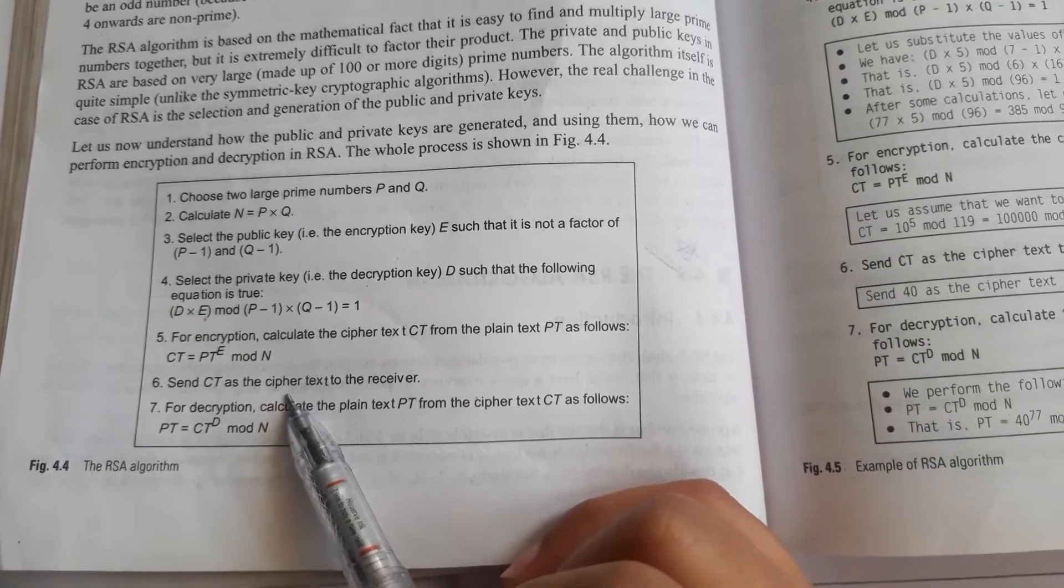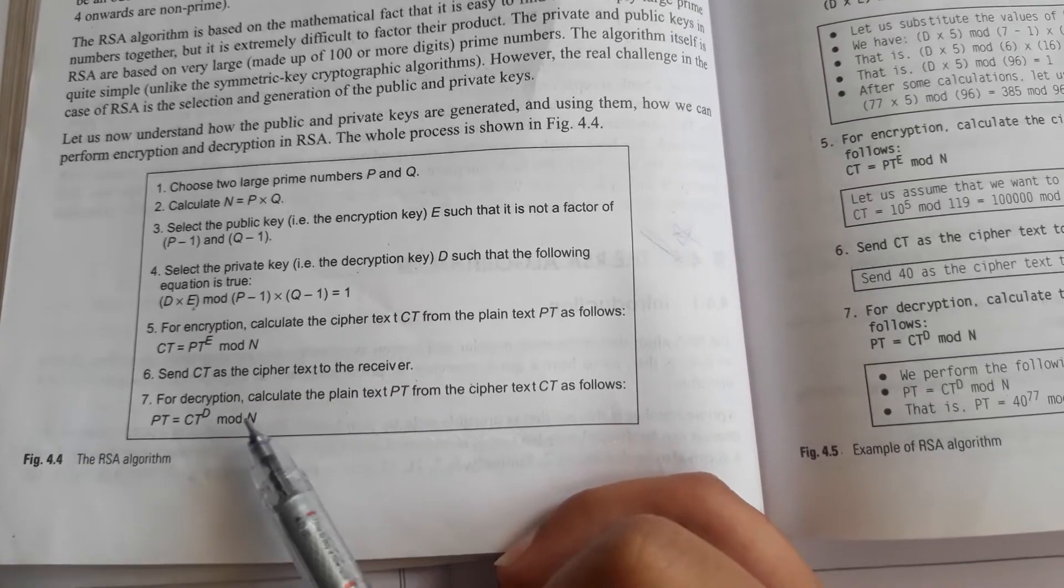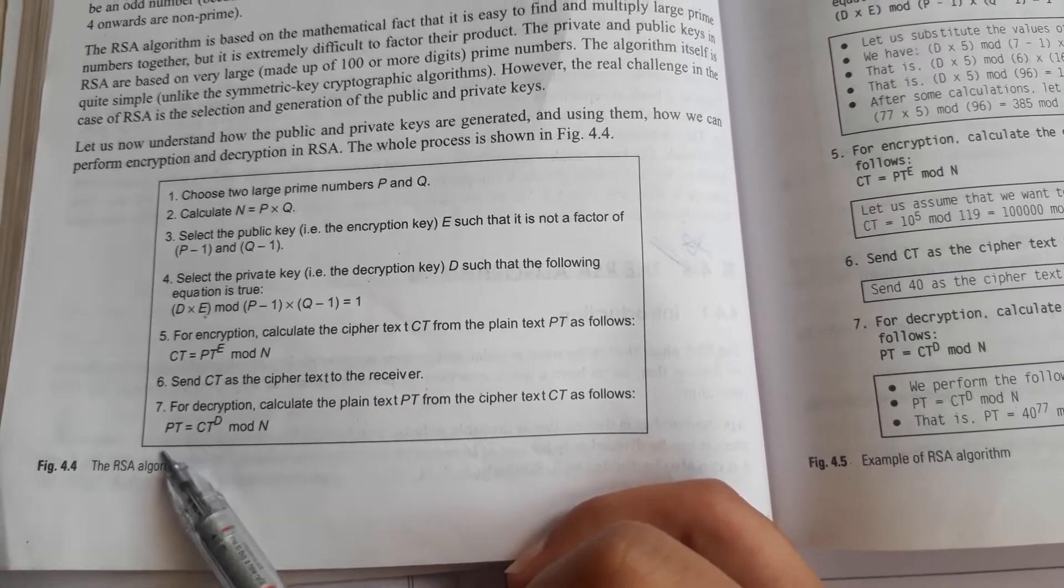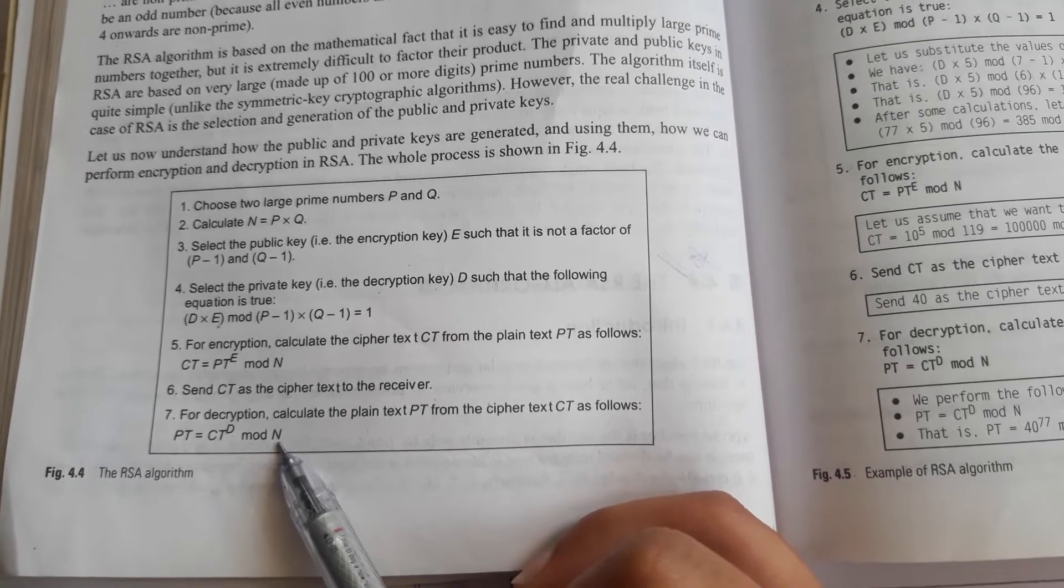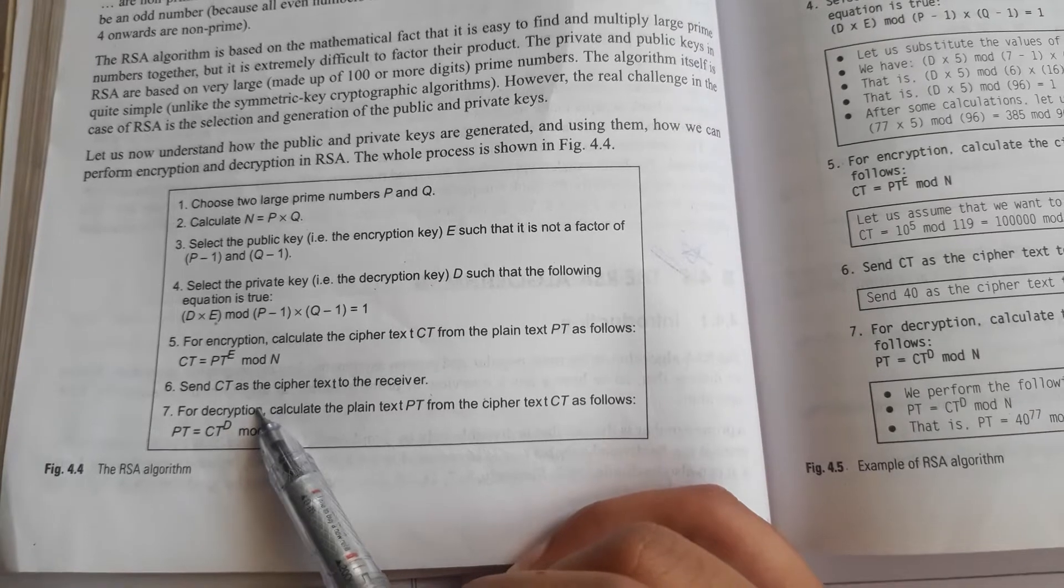the ciphertext CT is sent to the receiver and the receiver will decrypt that ciphertext into the plaintext using this mathematical notation: PT = CT^D mod n, where D is the decryption key or private key.